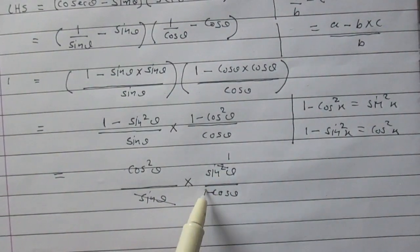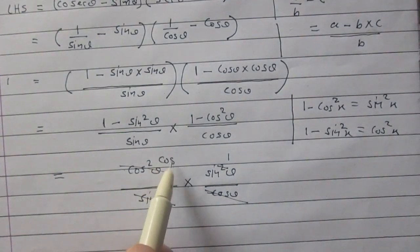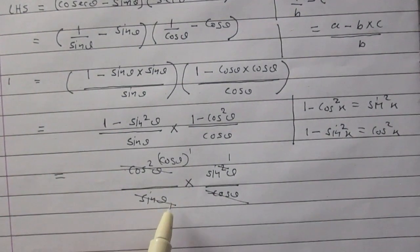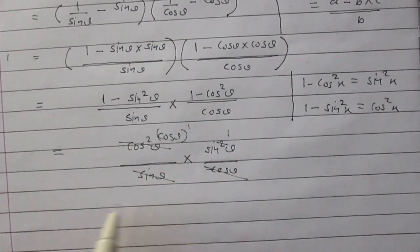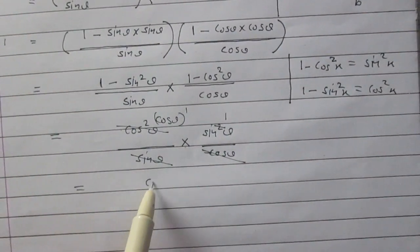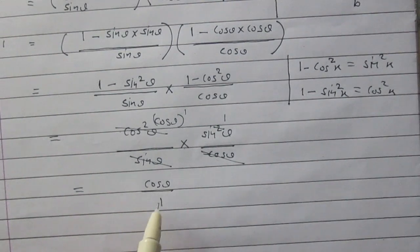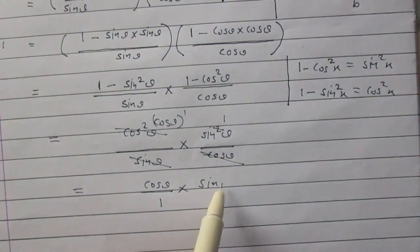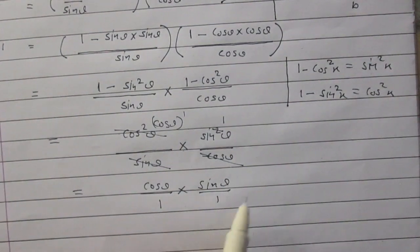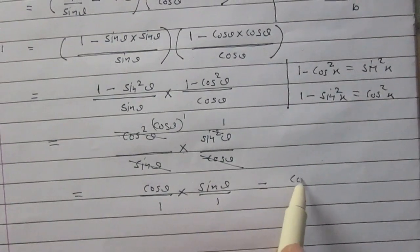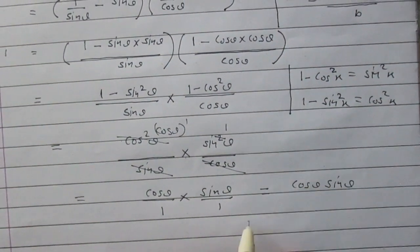Here cos²θ divided by cos θ gives cos θ raised to power 1, and sin²θ divided by sin θ gives sin θ. So we have cos θ upon 1 multiplied by sin θ upon 1, meaning the left-hand side simplifies to cos θ multiplied by sin θ.